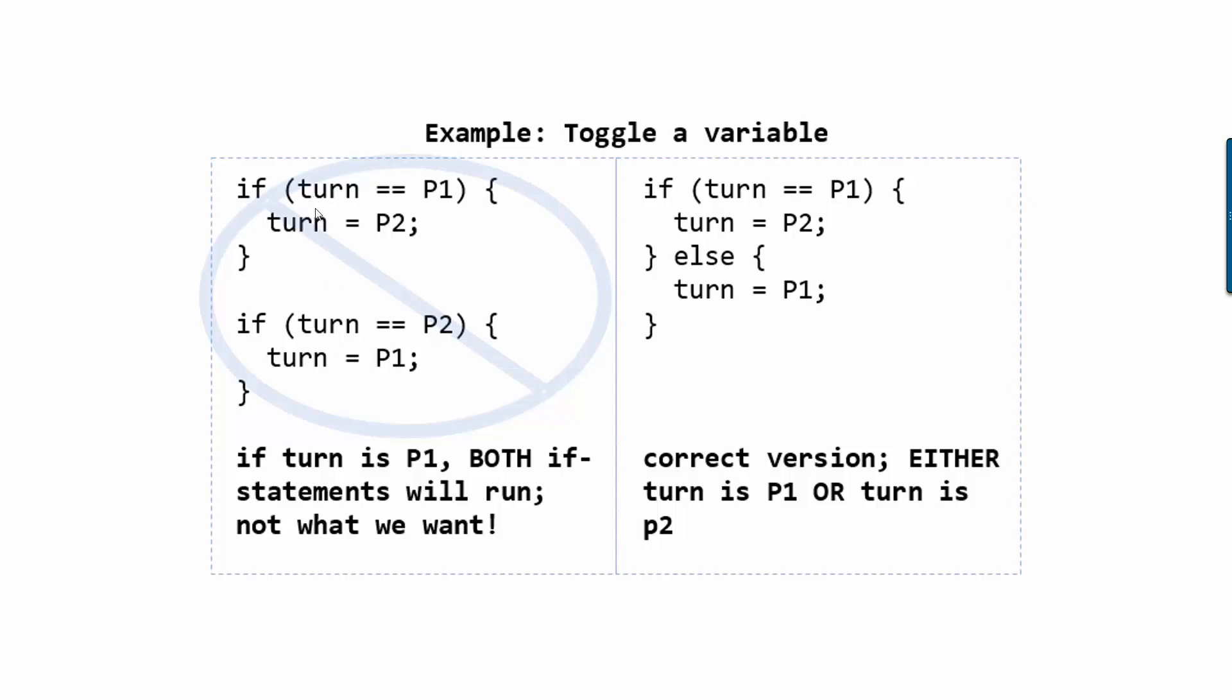So we'd assign two to the value of turn. And then the code would keep running, and now we'd ask is turn equal to two. And the answer is yes, because we just assigned it to be two in the previous if statement. And so because the answer is yes, we'll evaluate this statement, and we'll put one right back in there.